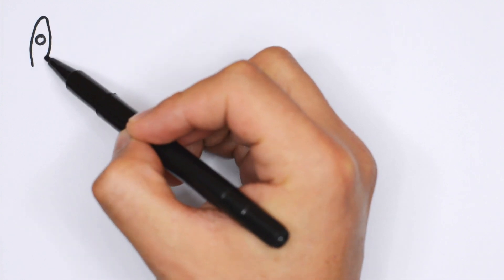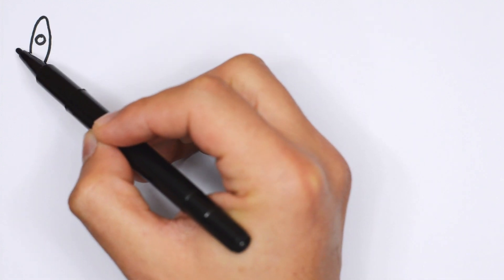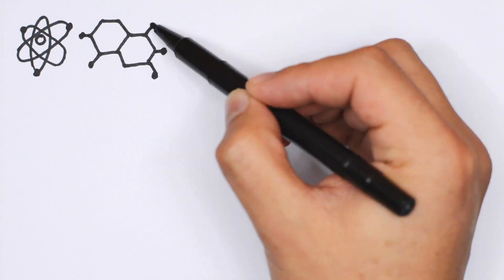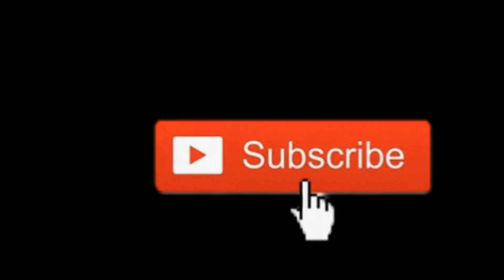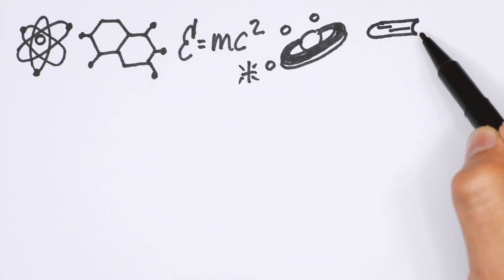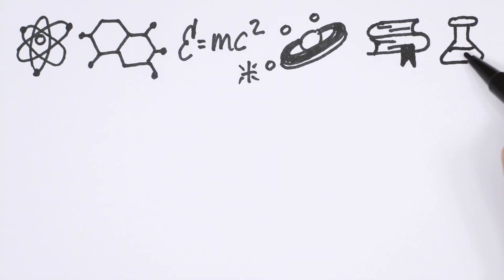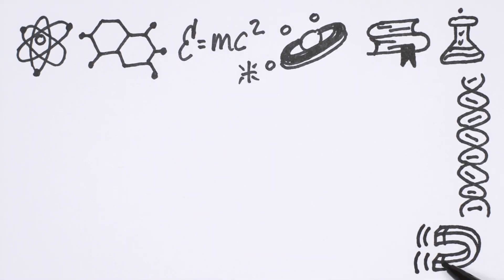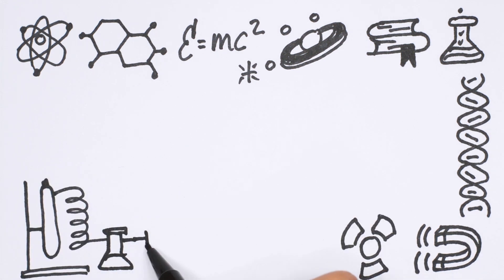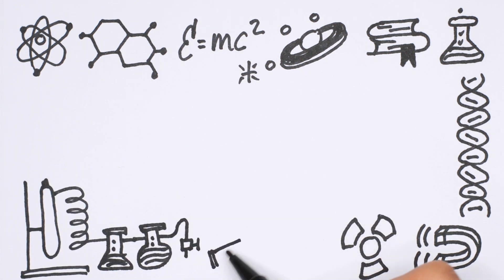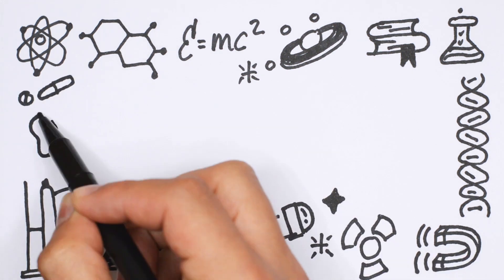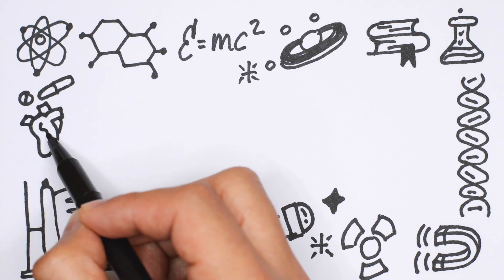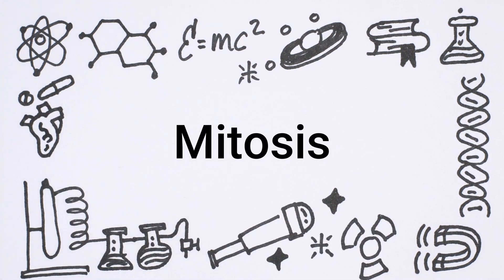Hi everyone, and welcome back to ThinkScience. If it's your first time here, make sure to hit that like and subscribe button, as well as the bell icon so you will receive notifications for future videos. We're back after a short break, and this time our units are going to be delving into molecular biology more and more, now that we've covered a lot of the cellular processes that happen in our bodies. Today, we're going to be focusing on mitosis, or the way most of our cells divide. Let's get started.